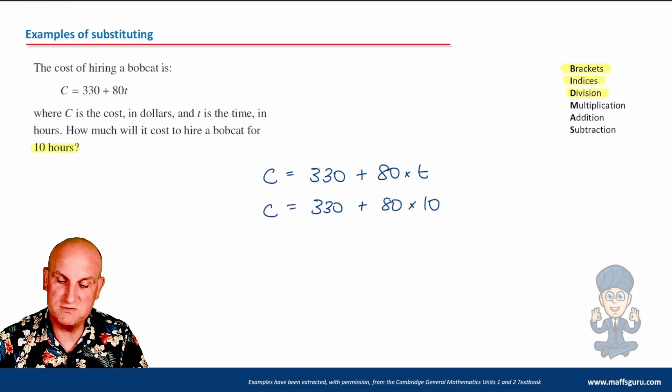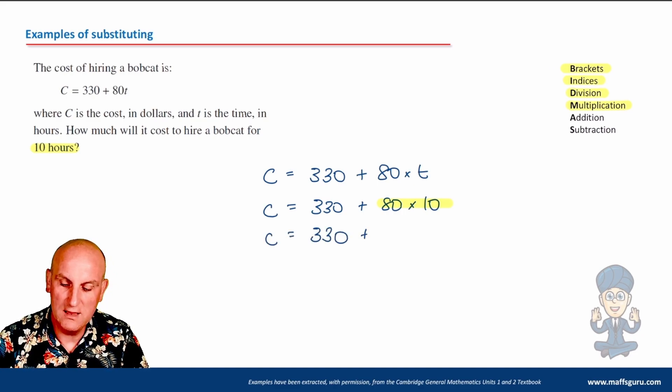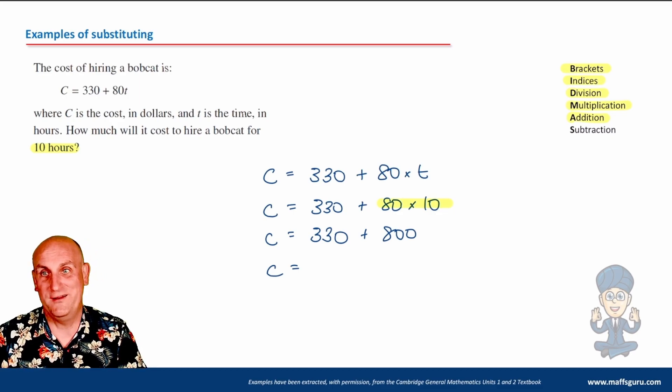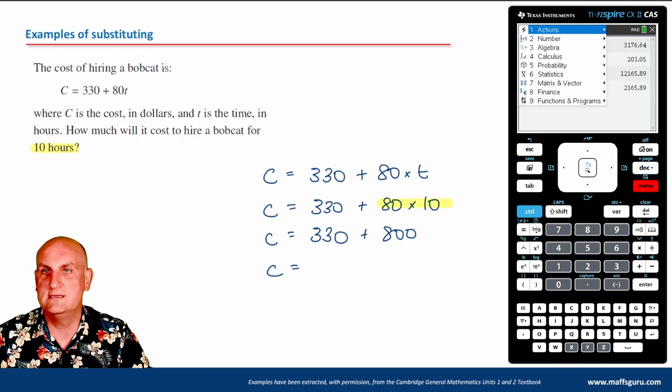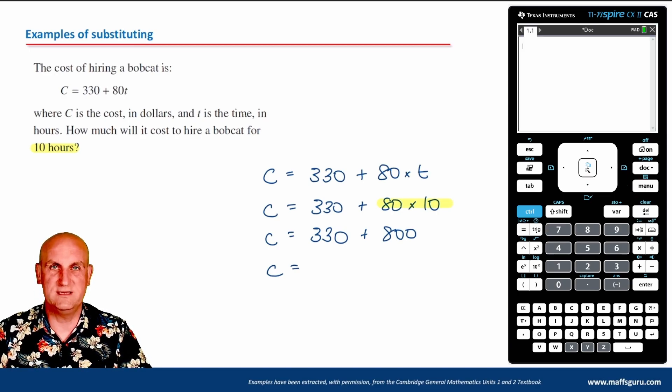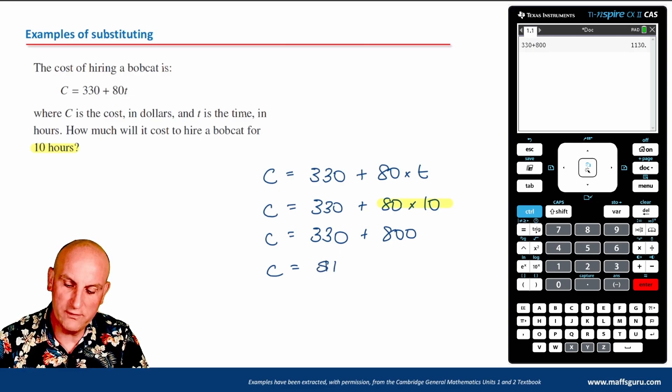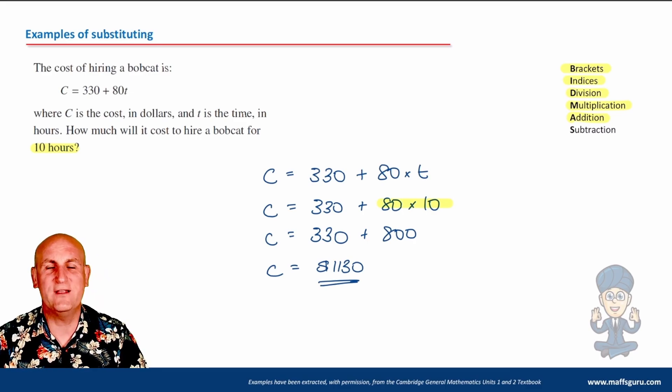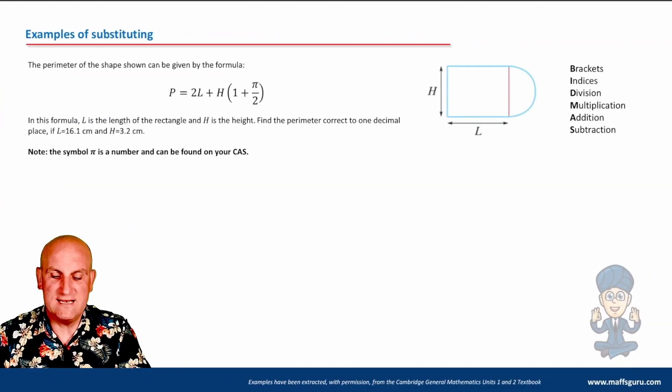Let's work through my BIDMAS. Brackets, no. Floaty numbers, no. Division, no. Multiplication, yep. So there is my multiplication. I'm going to do that first. So C hasn't changed. I'm not doing anything with the 330. 80 times 10, 800. What do I do now? Addition. So C in this situation is going to be 800 plus 330. I don't want to get that wrong. So what I'm going to do is fire up my calculator. Now I'm going to use the TI Inspire guys. So 330 plus 800 gives me a staggering value of $1,130.